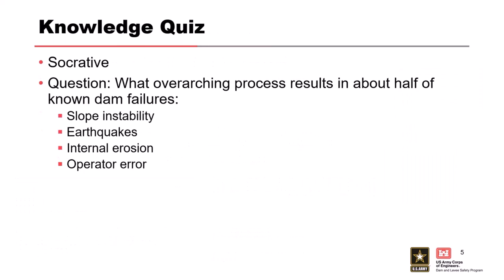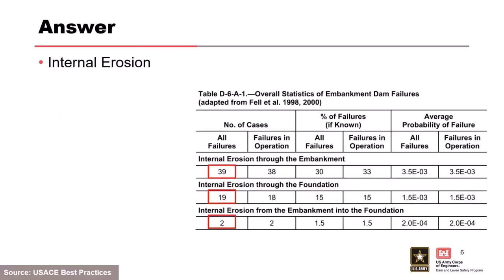We're going to start off with a Socrative question: What overarching process results in about half of known dam failures? The options are slope instability, earthquakes, internal erosion, or operator error. The answer is internal erosion — it's about half of known dam failures. The other half are overtopping, a hydraulic or hydrologic issue.